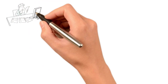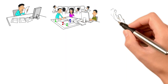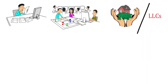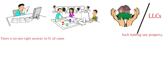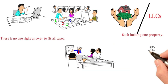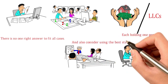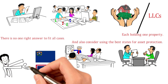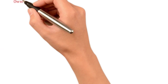When forming an entity, first consider the purpose: to operate a business or to hold assets. As a general guideline it is best to separate assets into LLCs each holding one property. There is no one right answer to fit all cases — be sure to work with your advisors to come up with the right entity mix. Also consider using the best states for asset protection: Nevada and Wyoming offer amazing legal and tax benefits for entities formed there.